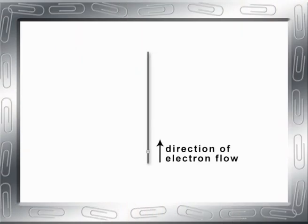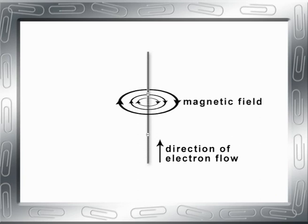When electrons move, for example when an electric current flows through a wire, it creates a magnetic field around it.